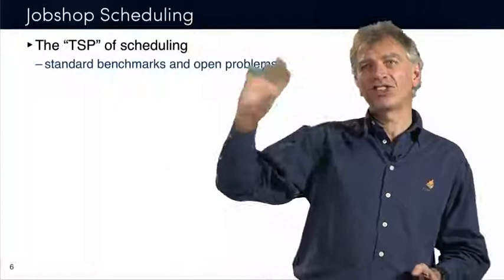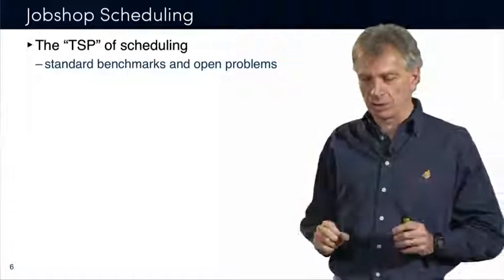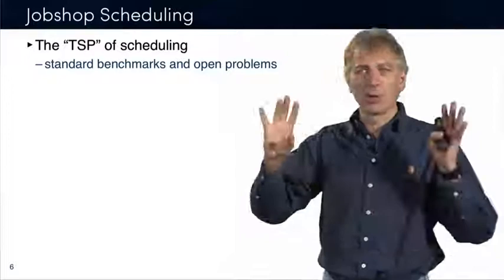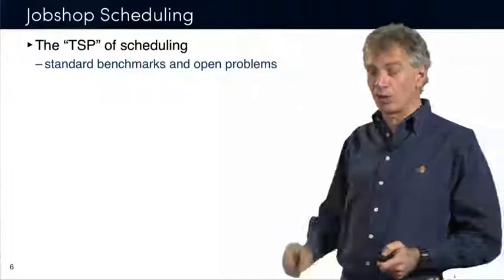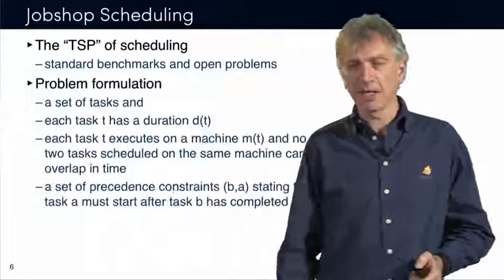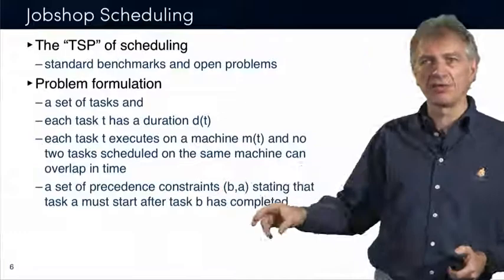One of the things that is the TSP of scheduling is called the job shop scheduling problem. It's probably the simplest scheduling problem, but it's also very hard. It's very simple to state and people have been competing on this forever. There are a lot of standard benchmarks on this and there are also a lot of open problems. It's not very difficult to generate instances that nobody can solve optimally.